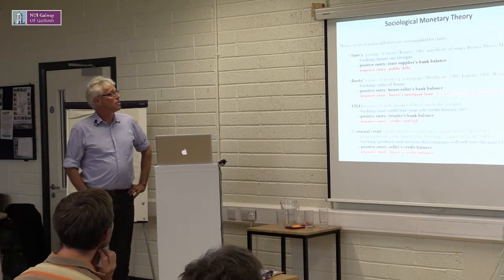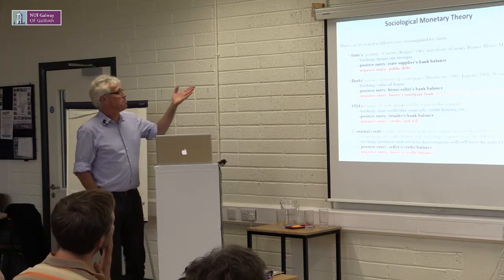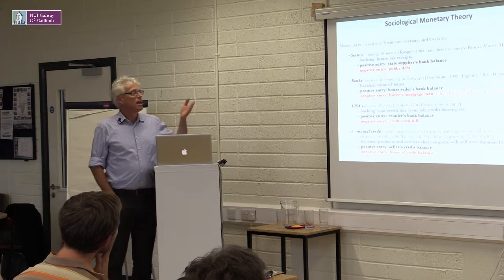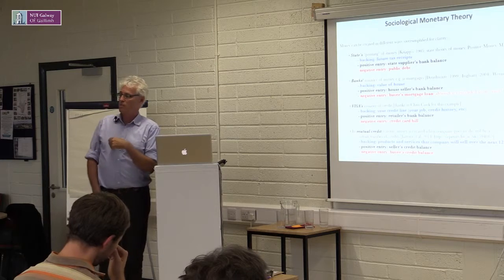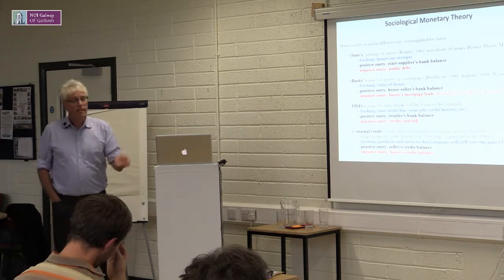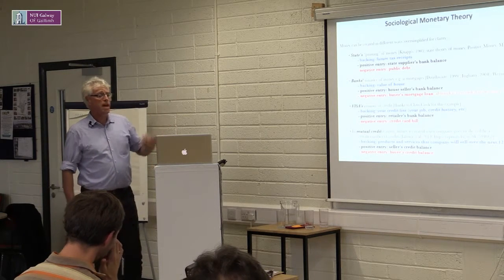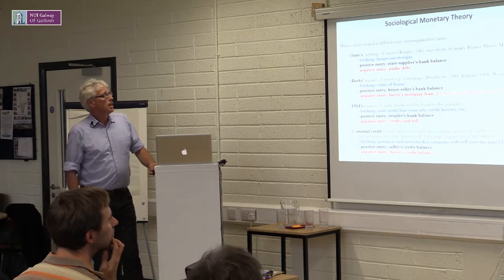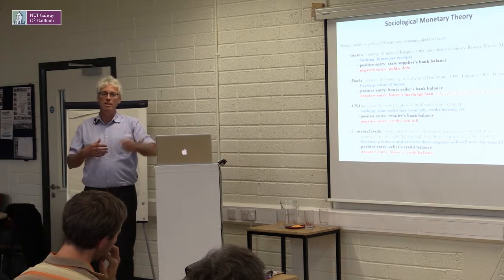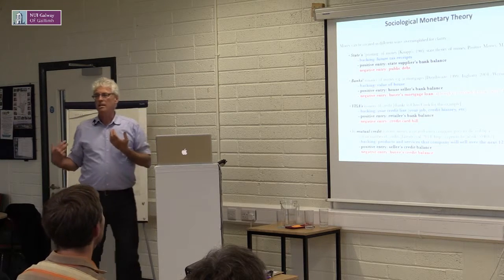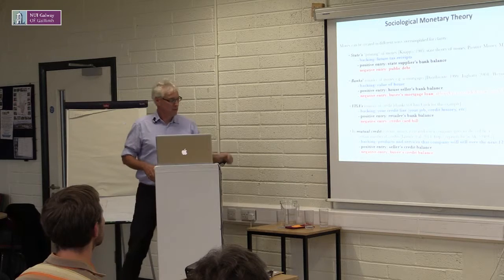Some examples — oversimplified, but let's go for sake of time and simplicity. When the state prints money, the backing is future tax receipts. An example of when that did not work is Argentina in 2001: foreign markets lost confidence that the Argentinian government was going to be able to collect taxes, and the peso — which was pegged to the dollar at the time — collapsed because the perception of the backing fell through. The positive entry in the bookkeeping method is the state supplier's bank balance; the negative entry is the public debt.